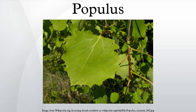Ecology: poplars of the cottonwood section are often wetland or riparian trees. The aspens are among the most important boreal broadleaf trees. Poplars and aspens are important food plants for the larvae of a large number of Lepidoptera species. Pleurotus populinus, the aspen oyster mushroom, is found exclusively on deadwood of Populus trees in North America.